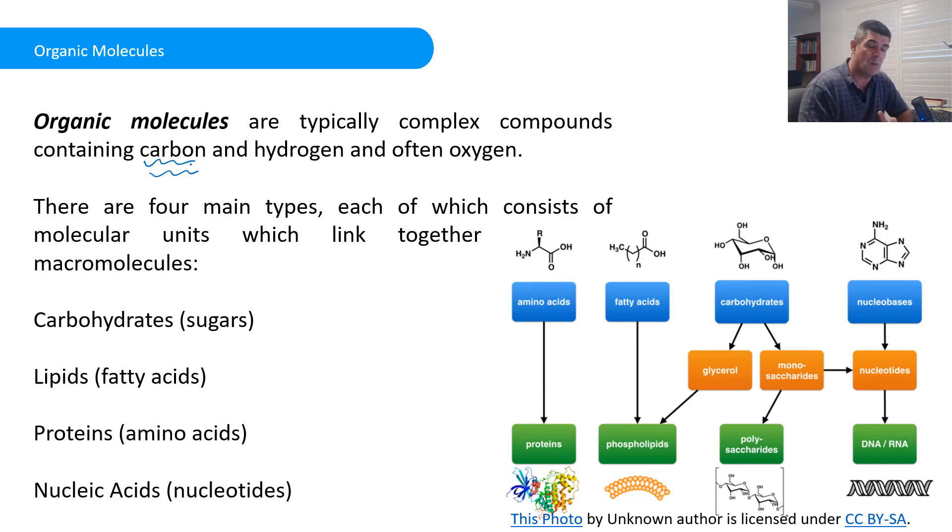Now, one thing that I guess is important to have a look at here is the difference between the monomer units, or the simple forms, and the polymer units, or the more complex forms. And each of these key groups of organic molecules does have a simple form and a complex form.